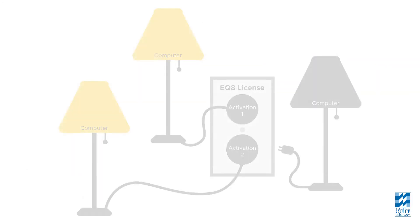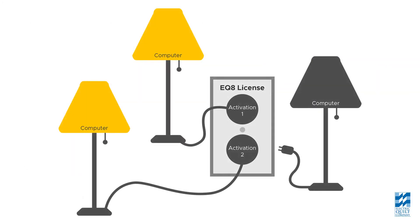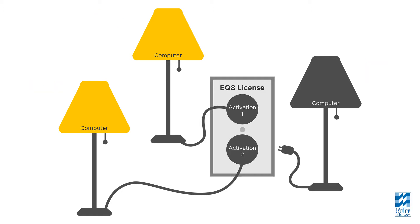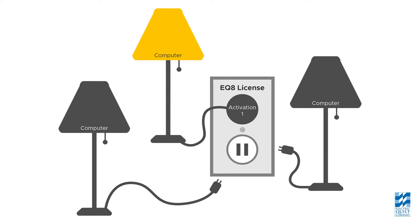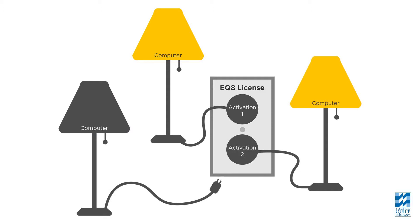It's kind of like a wall outlet. If you have three lamps — which are your computers — and only one outlet, which is your license, and the outlet has two plugs, or activations, you need to unplug one lamp before plugging in the third lamp. You get to choose which lamp you want to use.